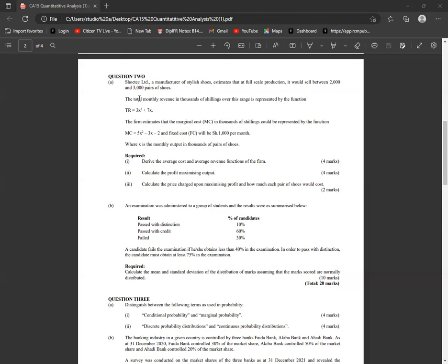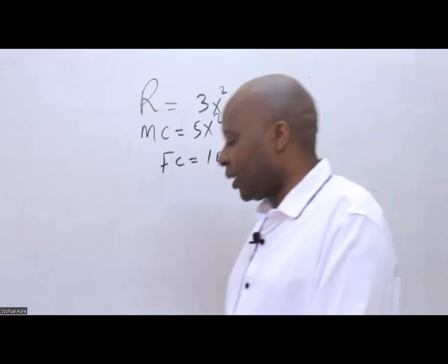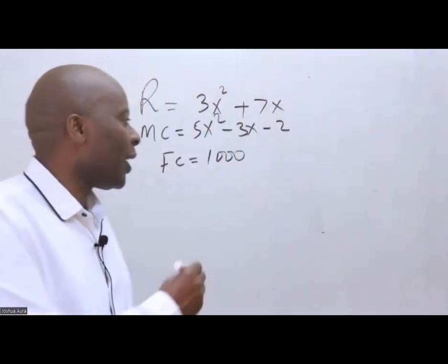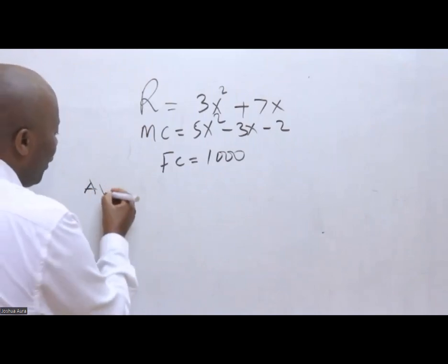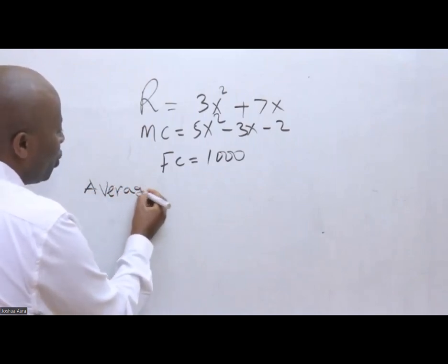Required: derive the average cost and average revenue functions of the firm. I would start with average revenue. The first thing that is quite a low-hanging fruit here is the average revenue.